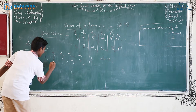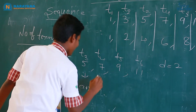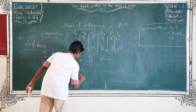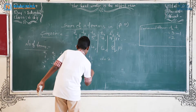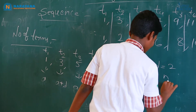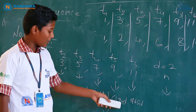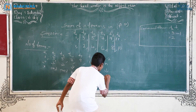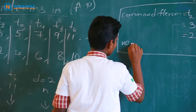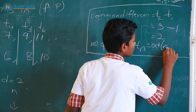Here we got A, and we can write 3 as A plus D, 5 as A plus 2D, 7 as A plus 3D, 9 as A plus 4D, and 11 as A plus 5D. For the Nth number, we can write A plus N minus 1 into D. We got the formula for the Nth term: Tn equals A plus N minus 1 into D.